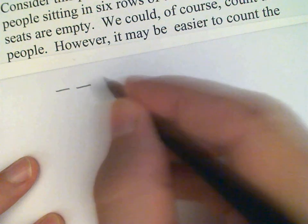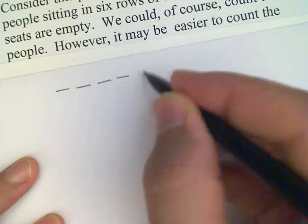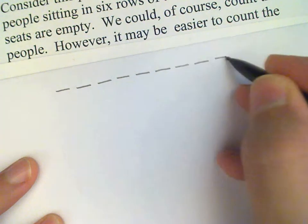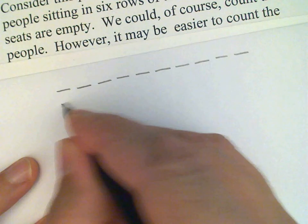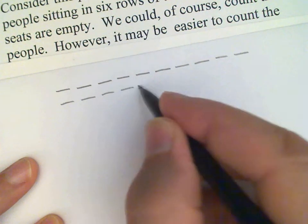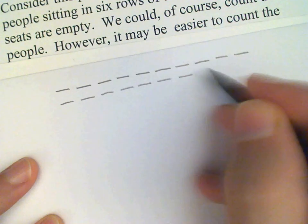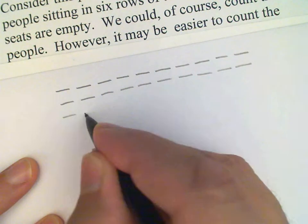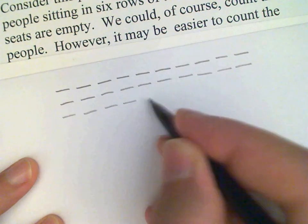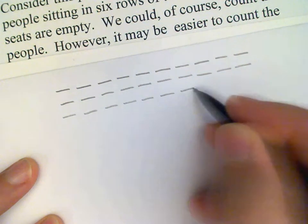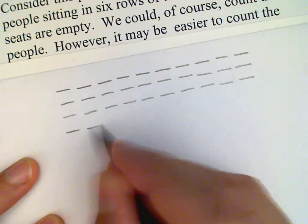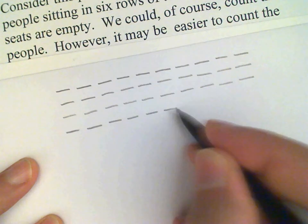So now we have six rows of ten chairs each. I'm drawing the chairs now. And then I'm going to put X's in the chairs to represent the people sitting in them.